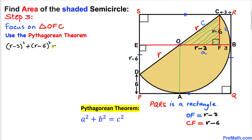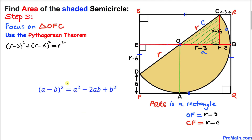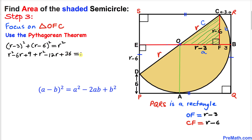Applying the Pythagorean theorem gives us: (r minus 3) squared plus (r minus 6) squared equals r squared. Now we are going to use the (A minus B) squared formula to expand these two binomials. The first binomial gives us r squared minus 6r plus 9, and likewise the second binomial becomes r squared minus 12r plus 36, all equal to r squared.